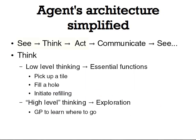Agents use a classical see, think, and act feedback control loop. We added a fourth step for communication to exchange information between agents. There are two levels of thinking in our agent. Low-level thinking takes care of the essential functions — similar to humans, we don't consciously control functions like breathing. For our agent, it means it will, for example, pick up a tile, put down a tile, or initiate refueling automatically. The high level is then where we apply evolution to optimize the way to explore the environment.